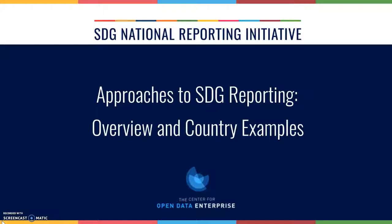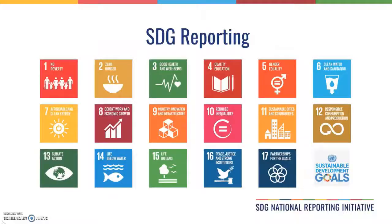Today I will be giving an overview of current approaches to SDG reporting and walking through some examples from different countries and regions. The 2030 Agenda for Sustainable Development includes 17 Sustainable Development Goals, also known as SDGs, supported by 169 targets and 232 indicators.